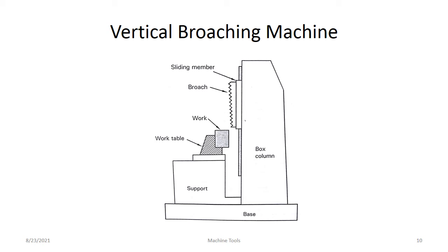Vertical broaching machine — you can see the figure. This is the base, support, and box column. This is the broaching tool and the sliding member. These are the guideways — vertical column guideways are provided, on which the broach tool moves up and down. This is the work table. In the vertical broaching machine, the broaching tool reciprocates in the vertical direction — moving up and down. The machine was designed primarily to overcome the disadvantage of the horizontal broaching machine, which occupied much floor space.